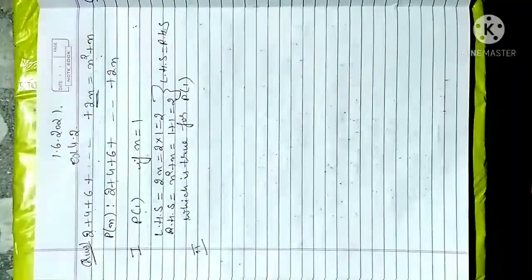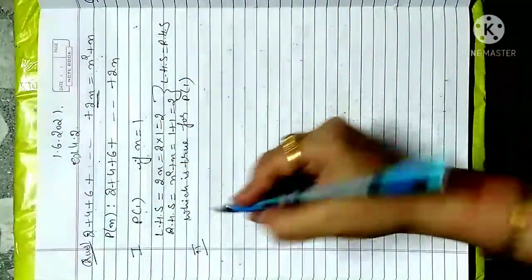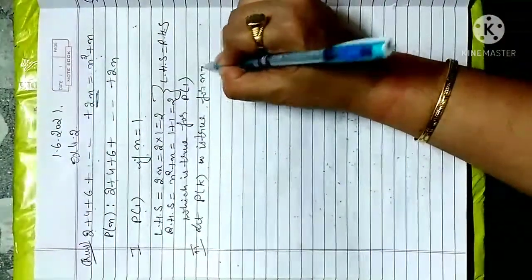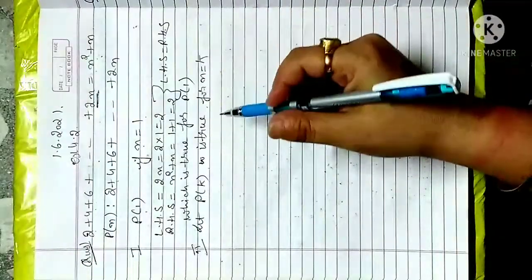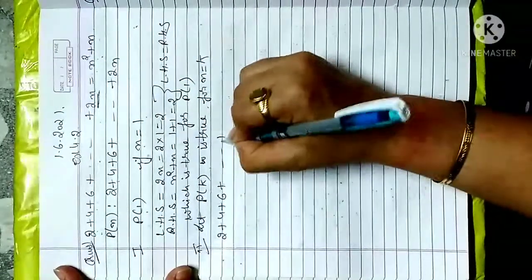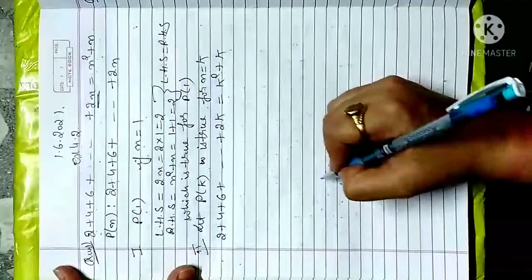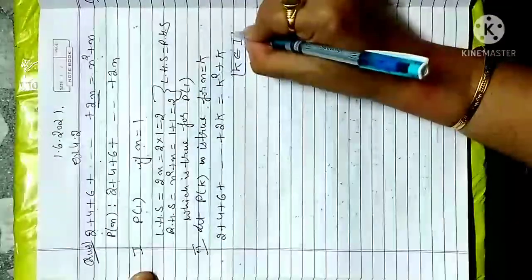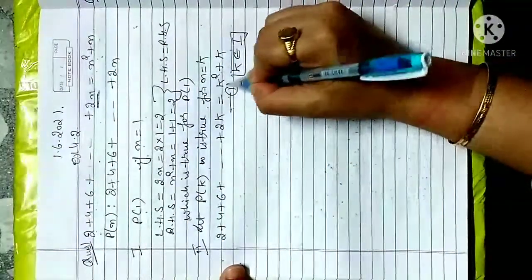Now in the second step: if it is true for n equal to 1, then we assume that if we substitute k in place of n, it will also be true — that we assume. So if we assume this, the total equation becomes 2 plus 4 plus 6 plus ... plus 2k, replacing n with k, where k is any integer. We can directly state k belongs to integers. This is our second step and we consider this as equation 1.